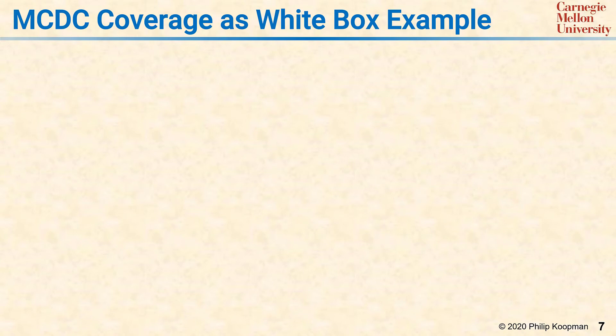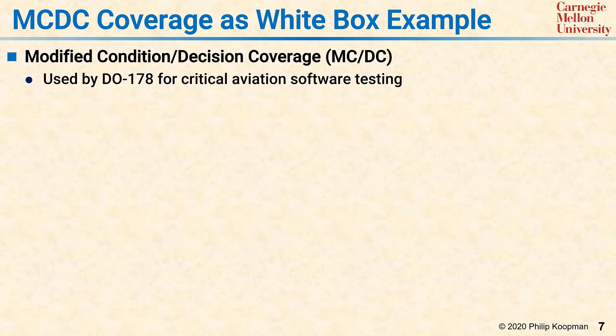An even more sophisticated type of coverage is MCDC coverage for white box testing. MCDC is Modified Condition Decision Coverage. It's used by DO-178 for critical aviation software testing and is commonly used for other safety critical applications where you have to be really sure the code's always going to work and do exactly the right thing, or else somebody could die.